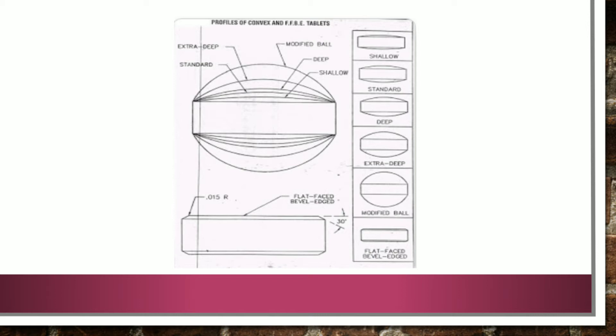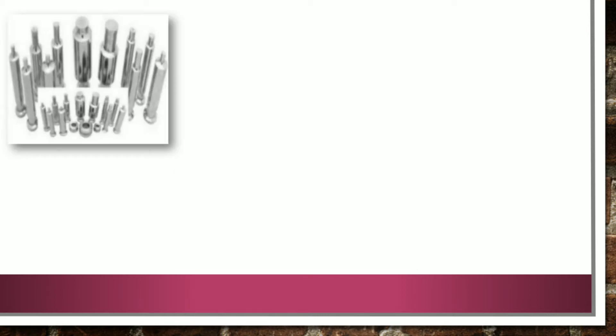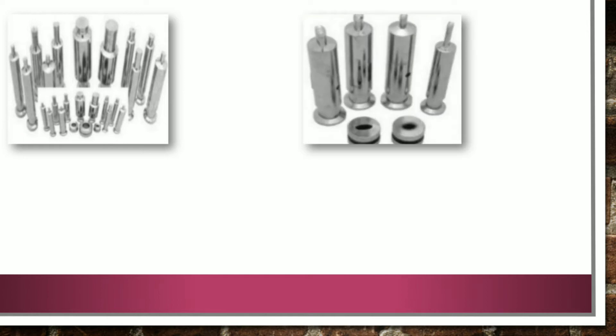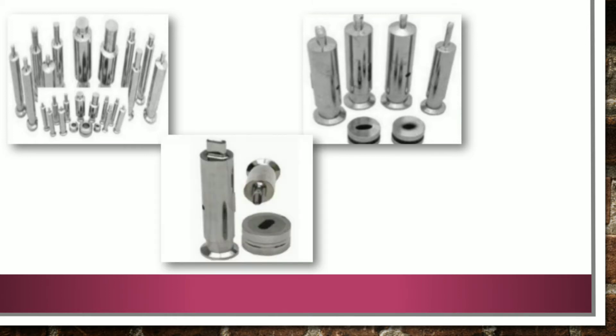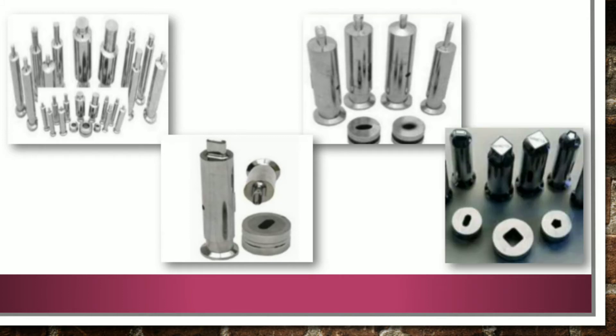Here you can see a round shaped punch die set, then an oval shaped punch die set, then a capsule shaped punch die set, and the last one is a geometric shaped die set. All these are applicable to pharmaceutical as well as ayurvedic industries for manufacturing tablets of different sizes and shapes.